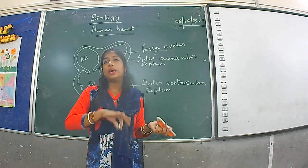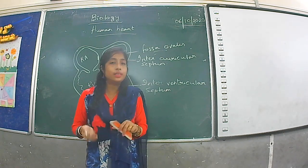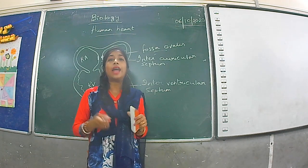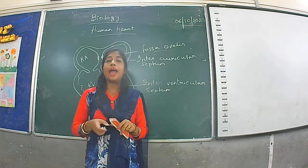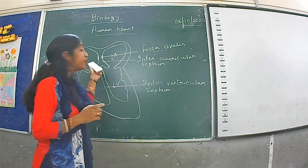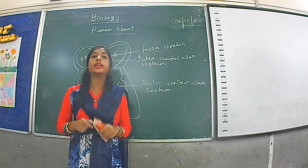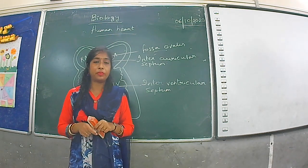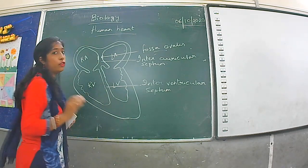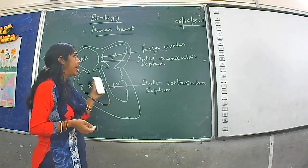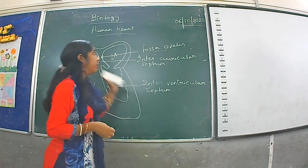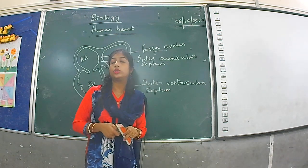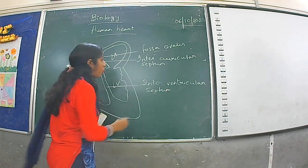After the embryo becomes an adult — actually at birth — the foramen ovale no longer remains; it becomes closed. It leaves behind a scar or depression which is known as the fossa ovalis.